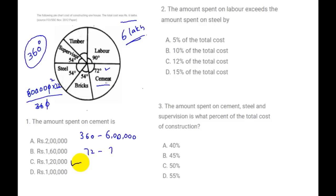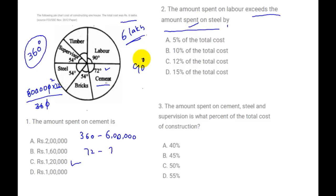Next question: the amount spent on labor exceeds the steel by what percent? Labor is 90 degrees and steel is 54 degrees. The difference is 90 minus 54, which equals 36 degrees.